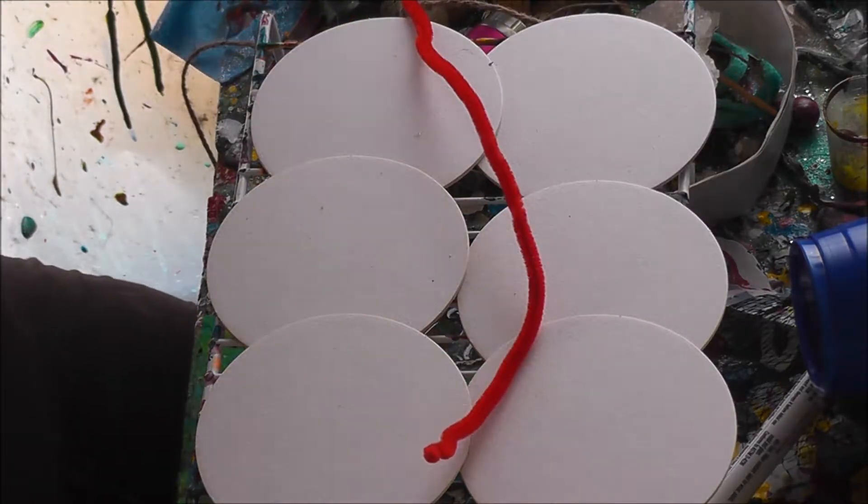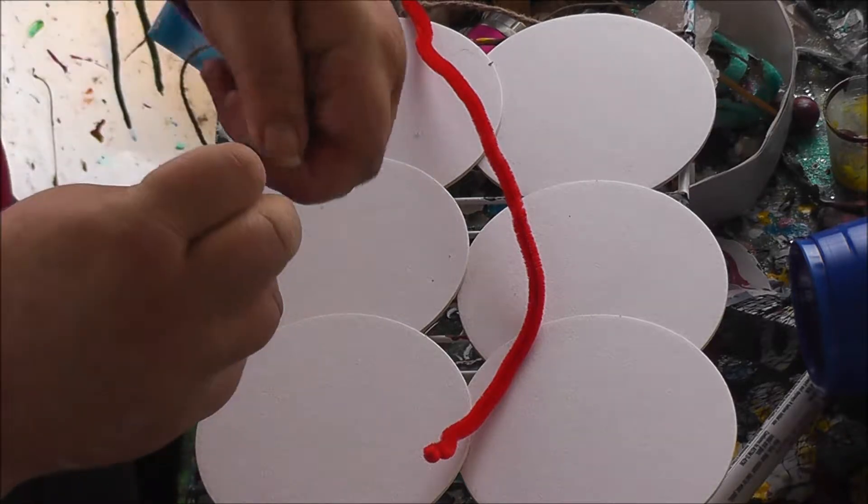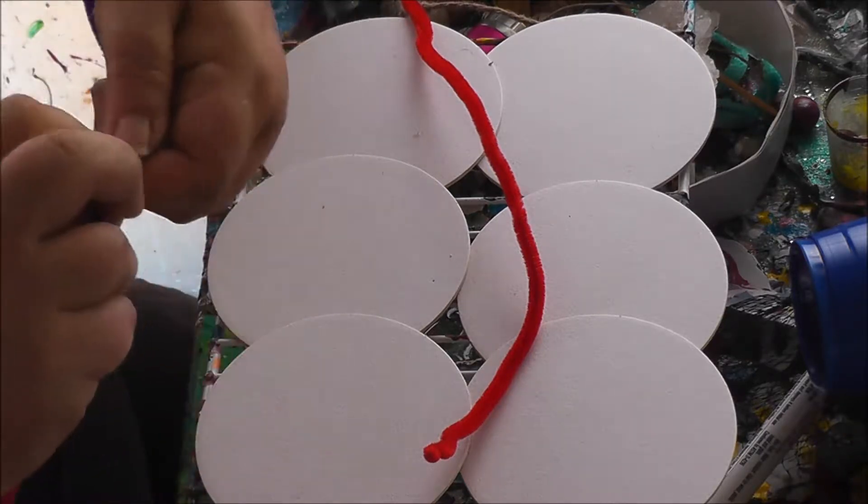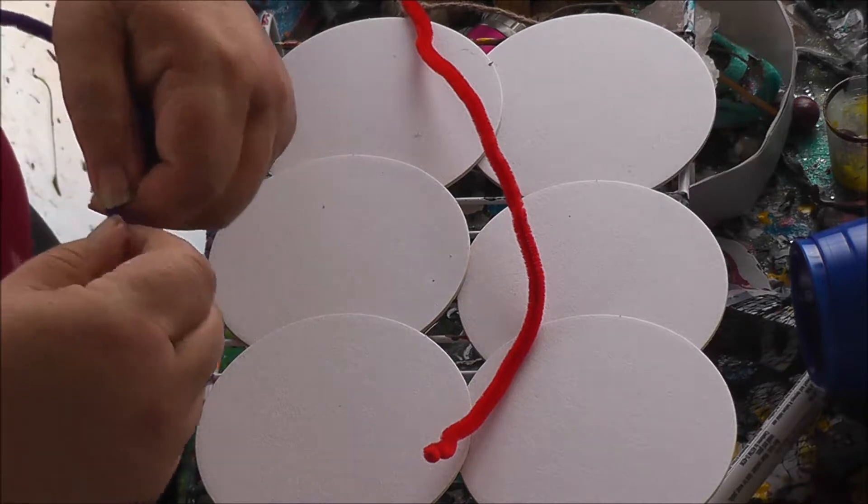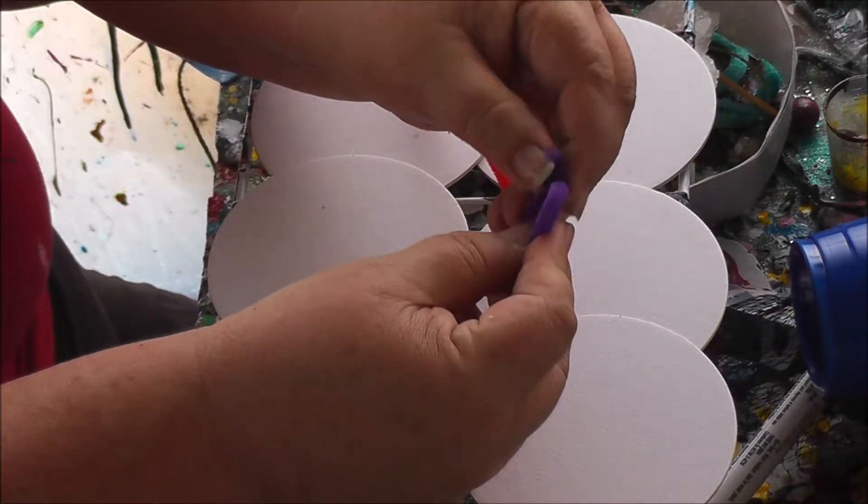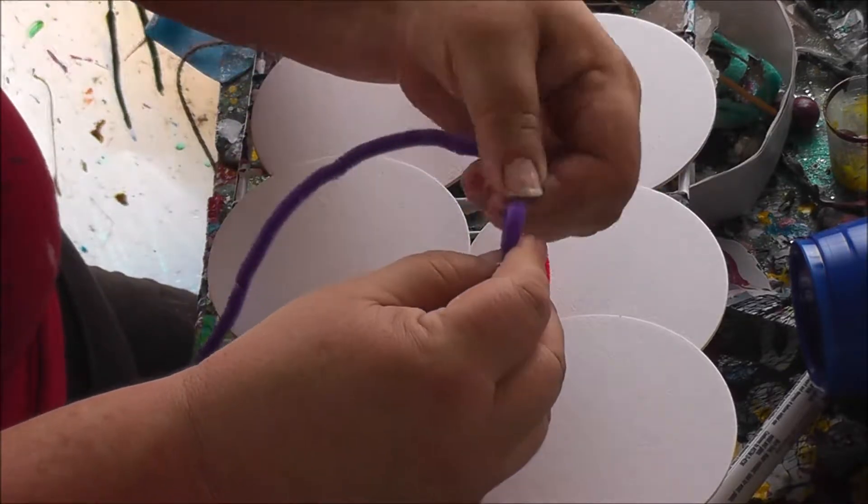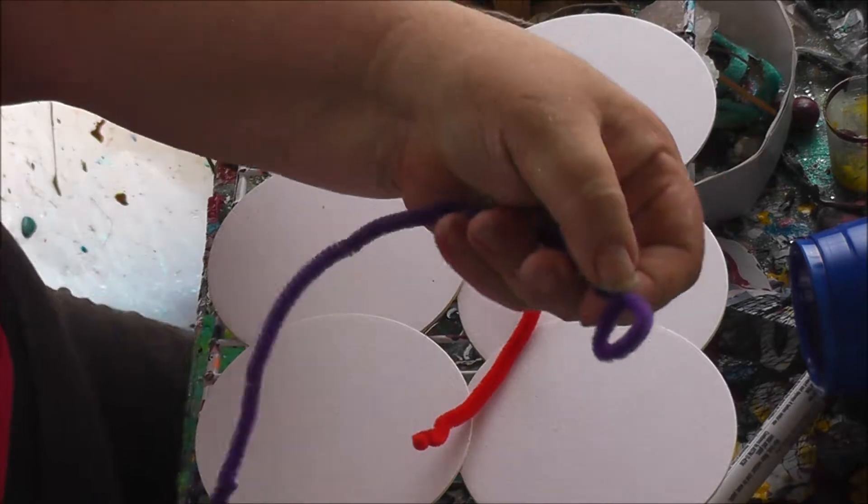Okay, first thing we're going to do, twist our pipe cleaners together to make one long pipe cleaner. Then you're going to make a loop and twist it just like that.